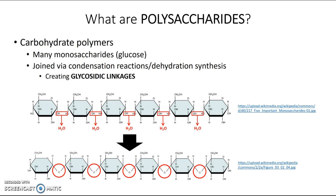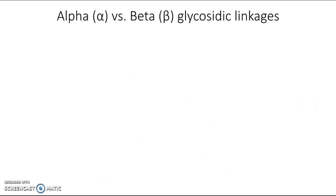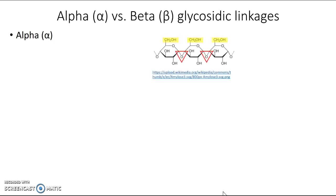Let's revisit those glycosidic linkages, as you'll need to know a bit more about them now. In the last video we briefly looked at alpha and beta glycosidic linkages. You can recognize alpha glycosidic linkages because the monomers that are linked are all facing the same way, and the linkages themselves are also facing the same way. In this example the linkages are kind of pointing downwards.